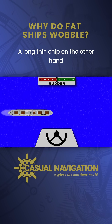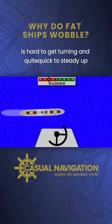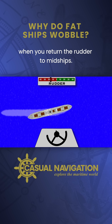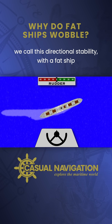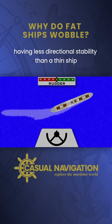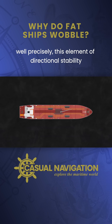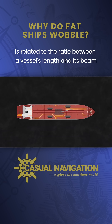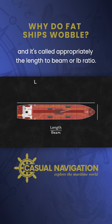A long thin ship, on the other hand, is hard to get turning and quite quick to steady up when you return the rudder to midships. We call this directional stability, with a fat ship having less directional stability than a thin ship. More precisely, this element of directional stability is related to the ratio between a vessel's length and its beam, and it's called, appropriately, the length to beam or LB ratio.